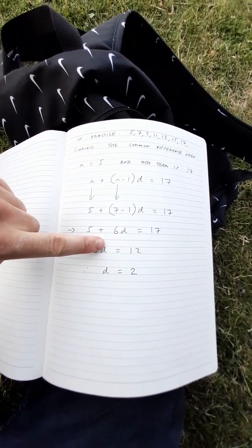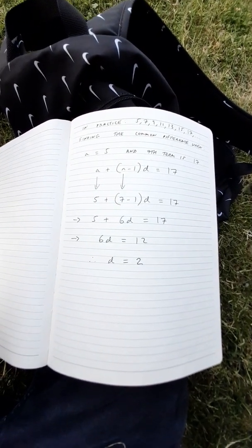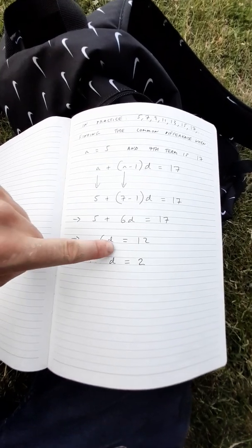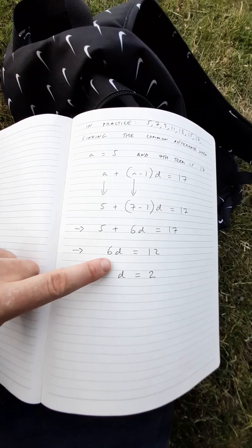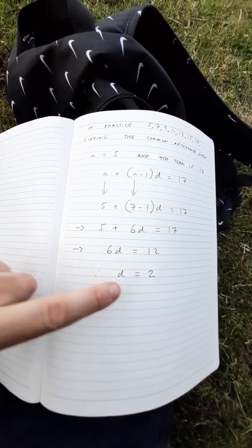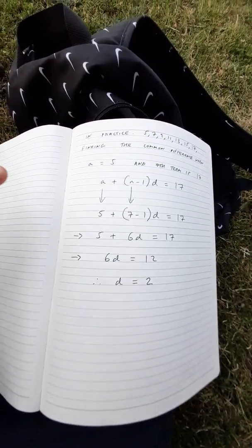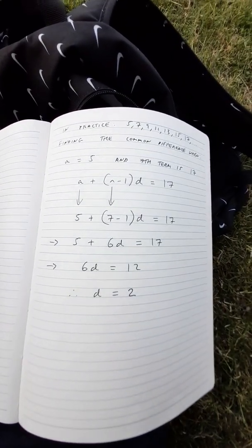This is the same as 5 plus 6d is equal to 17. If we subtract 5 from both sides we get 6d is equal to 12. Now if we divide both sides by 6 we get d is equal to 2 which is the common difference. And this is how you use this expression to get the common difference.